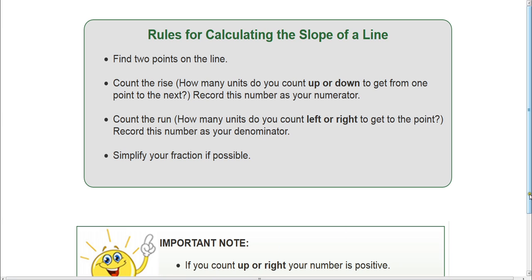A couple of things you need to think about when calculating slope — a couple of rules. The first thing you're going to do is find two points on the line. Those two points have to be exactly on the line, and they have to be points that you can read and identify accurately. You're going to use those two points to count the rise: how many units do you need to go up or down to get to the next point? That number is your numerator, because the formula for slope is rise over run. Then you count the run — how many units do you have to go left or right to get to that point? That number is your denominator. Then always simplify that fraction if possible.